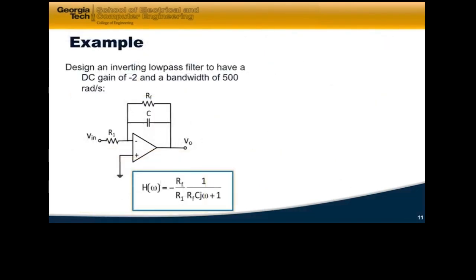So what we want to do is an example here. We want to design an inverting low pass filter to have a DC gain of minus 2 and a bandwidth of 500 radians per second. So let's go back to these formulas. The DC gain is H of 0, which is minus RF over R1, and that is equal to minus 2. And the bandwidth, omega sub B, is equal to 1 over RFC. So the bandwidth is equal to 1 over RFC. And that is equal to 500 radians per second. So now I have two equations. And I actually have three design parameters: RF, R1, and C. So I can just pick one.